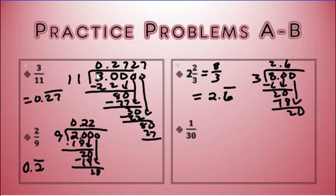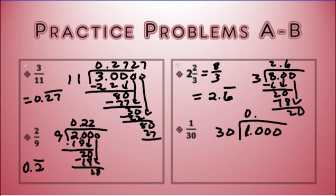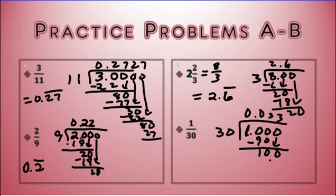Next: 1 divided by 30. I put a bunch of zeros after the decimal point so I know I have enough. 30 can't go into 1. 30 can't go into 10. 30 can go into 100 three times. 3 times 30 is 90. Subtract and get 10 again. Bring down the 0. 30 goes into 100 three times — that's 90 again. So it's just repeating. The answer would be 0.03 with only the 3 repeating.